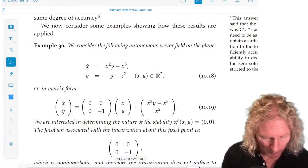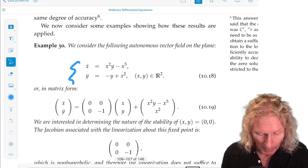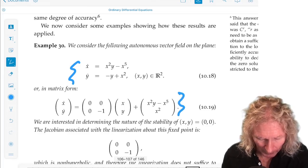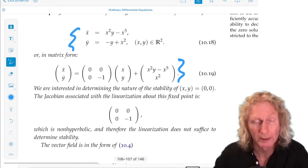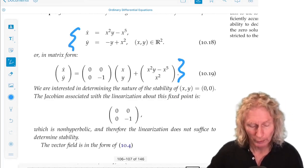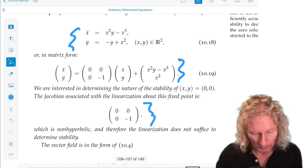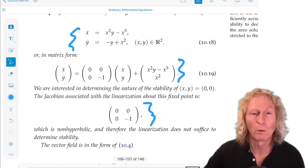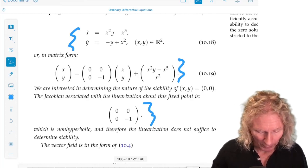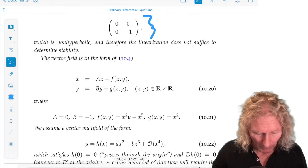Okay, so the first example: a two-dimensional autonomous vector field on the plane. If you write this in matrix form, you can see it's exactly in the form that I developed the general theory for. The origin is a fixed point, and the Jacobian associated with the linearization is given by this equation, so one eigenvalue is zero, non-hyperbolic, and one eigenvalue is minus one.